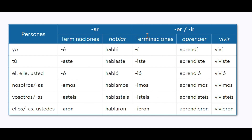Let's do one for vivir. So we would take away the IR, so it's viv. And then if we wanted to use the second person, we add -iste, so viviste. Viviste — very good. And this is how you can easily remember the proper conjugations.